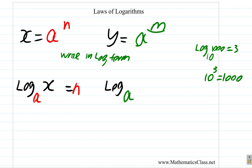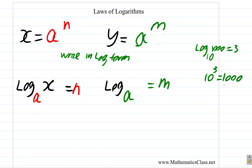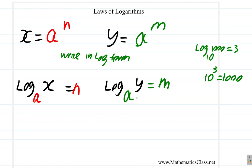Similarly, for y = a^m: the base of the index form, which is a, is also the base of the log form. The index m becomes the answer in log form. And the answer in index form, which is y, becomes the number that you log in log form. So log base a of y equals m. Alright, both converted to log form.